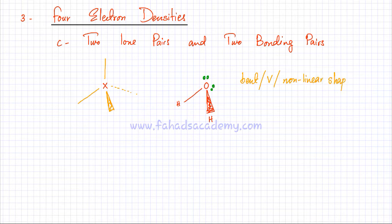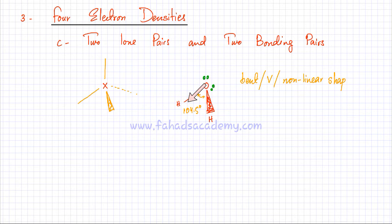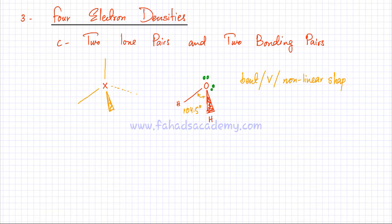The angle between the two hydrogen atoms is 104.5 degrees. The reason the angle is smaller is that lone pairs are not bonding to anything, so the electrons are not spread out — the negative charge is very concentrated. Lone pairs therefore exert a much greater repulsion, pushing the bonding pairs closer together. The angle decreases from 109.5 degrees in a regular tetrahedral shape down to 104.5 degrees.